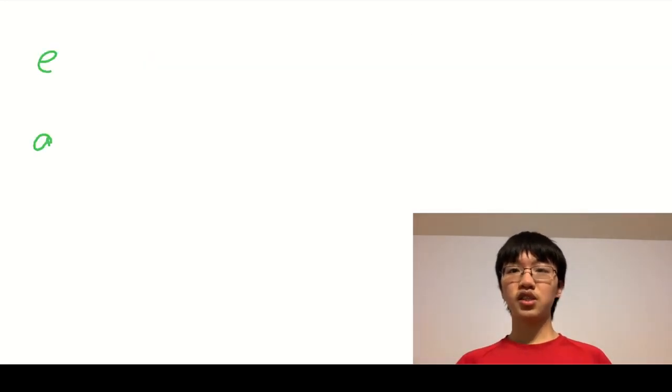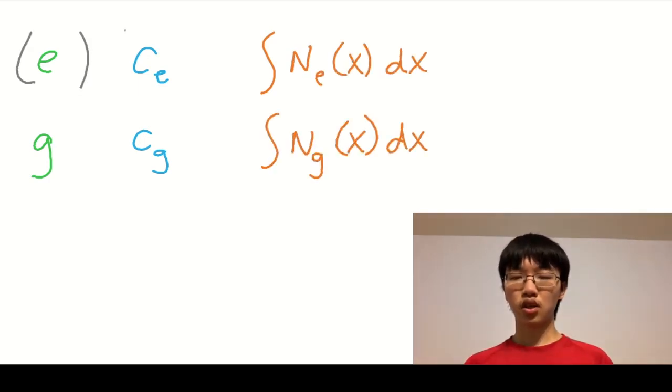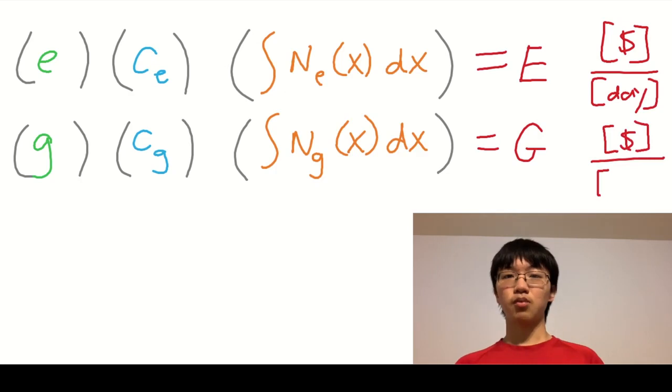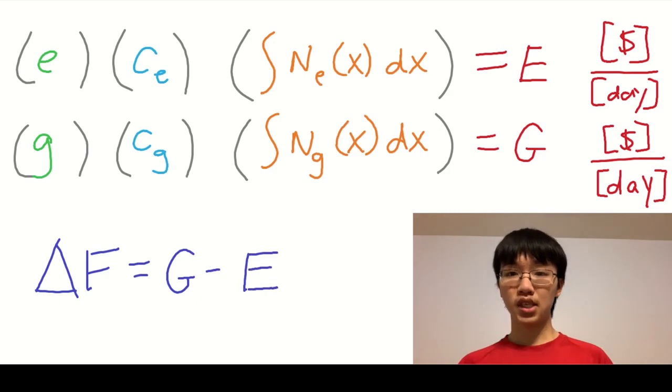Doing the same with diesel gasoline trucks, we can compute the dollars spent per day on refueling diesel gasoline trucks along the corridor. We call this big G. Finally, we can find a cost reduction by transitioning to electric trucks, delta f, by computing big G minus big E.